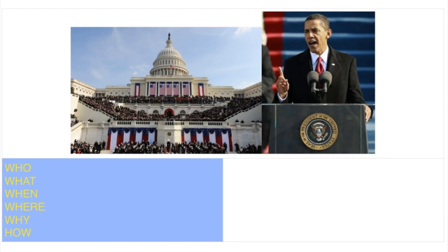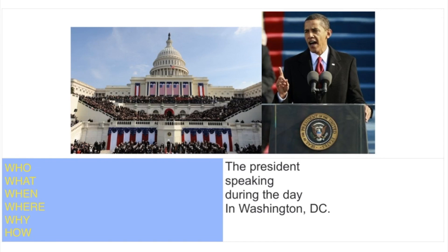Let's do another example. We have two pictures — think of who, what, when, where, why, and how. Who is in the photo? The president. What is the president doing? He's speaking. When? During the day. Where? In Washington, D.C. Why is the president speaking? Maybe he wants to talk to the people. How is he speaking? He's using a microphone.